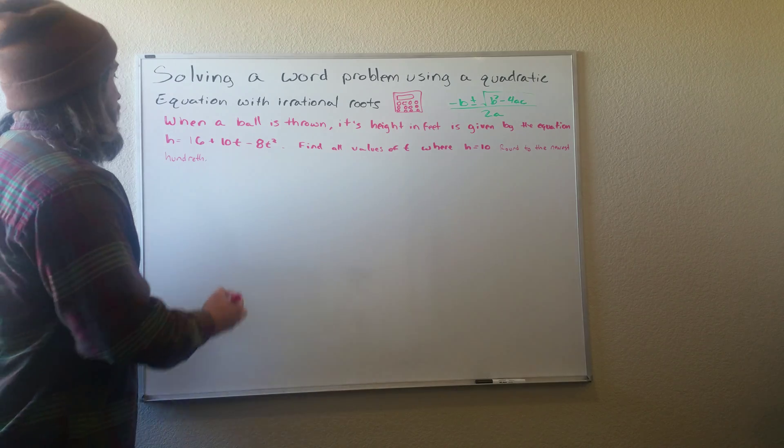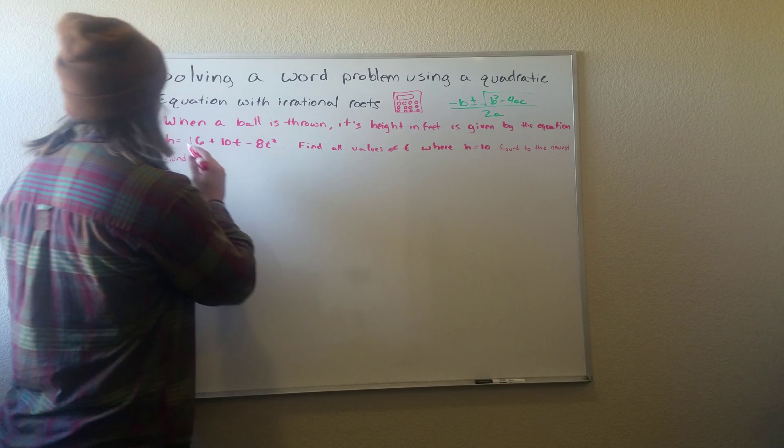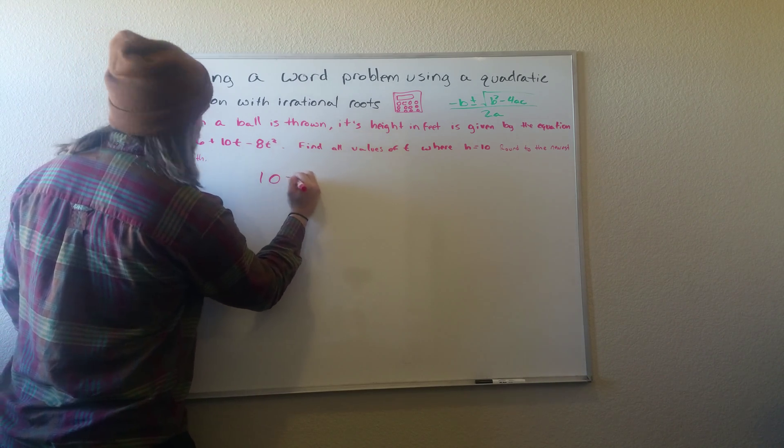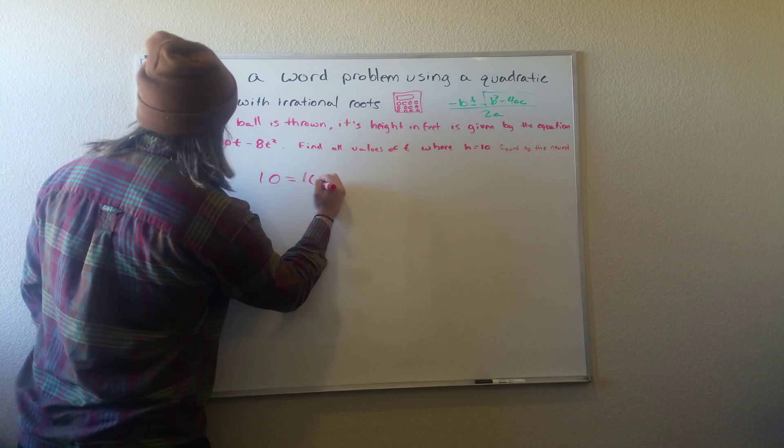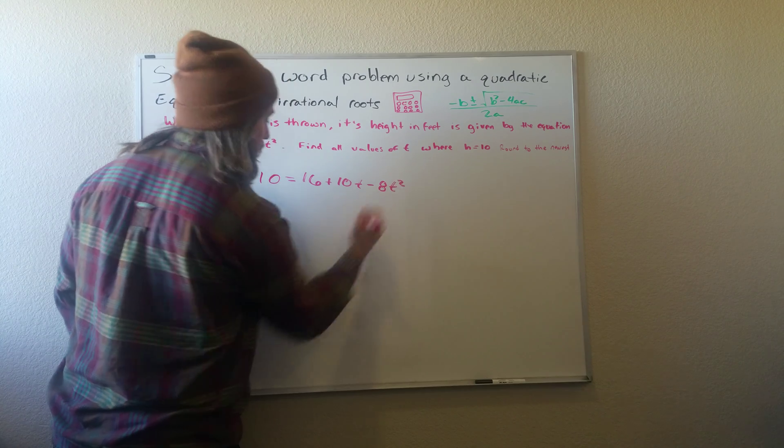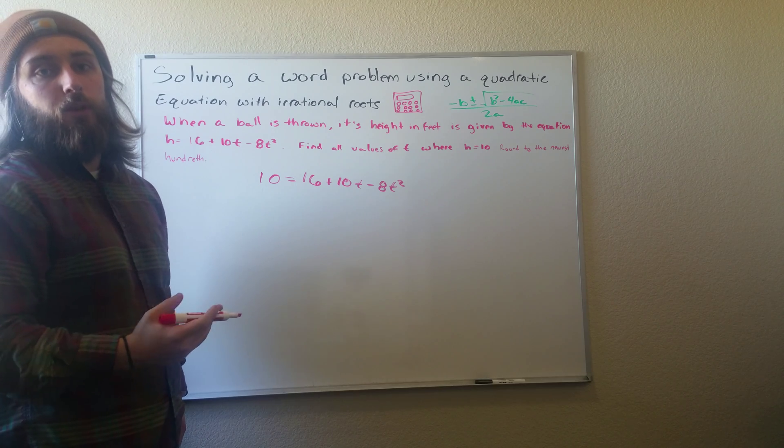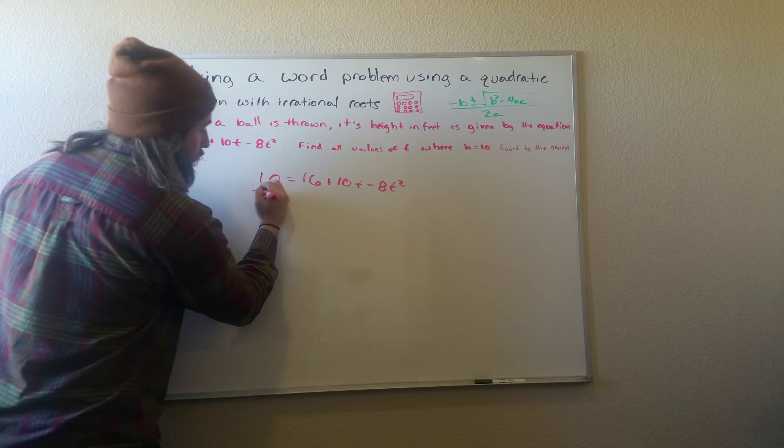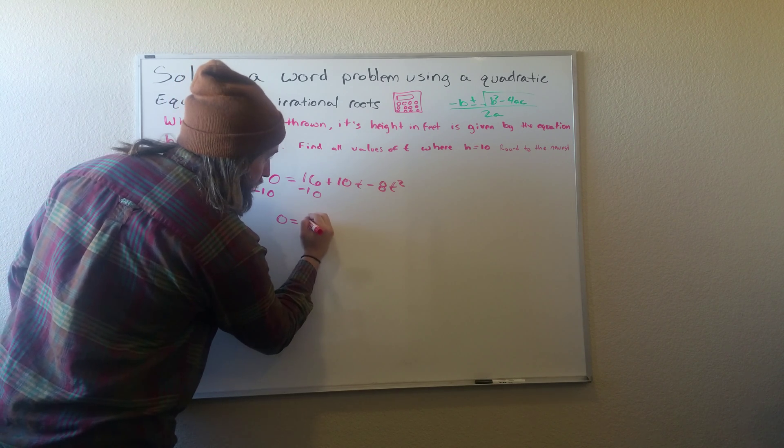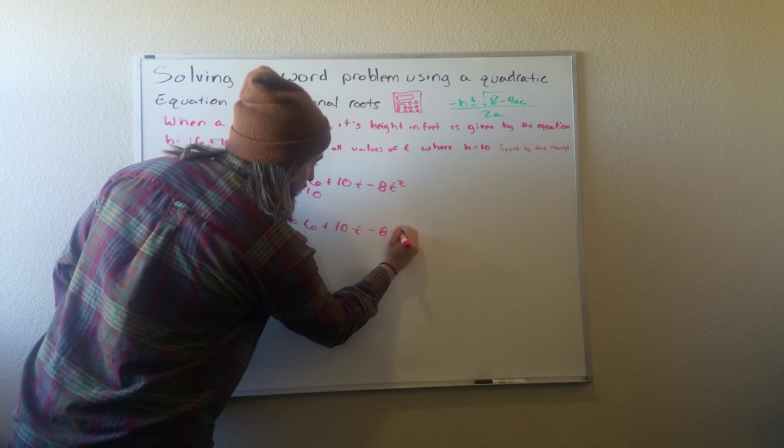So for this problem, the first thing we want to do is whatever it says h equals, we want to set it equal to this equation. So we'll have 10 equals 16 plus 10t minus 8t squared. And we know a quadratic equation has to equal 0. So we'll subtract the 10 on both sides. And then we'll have 0 equals 6 plus 10t minus 8t squared.